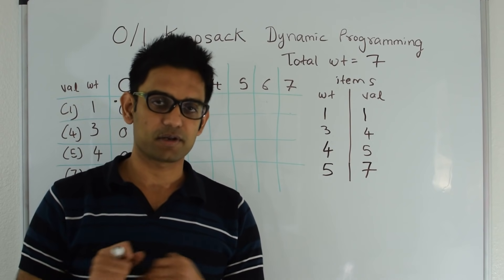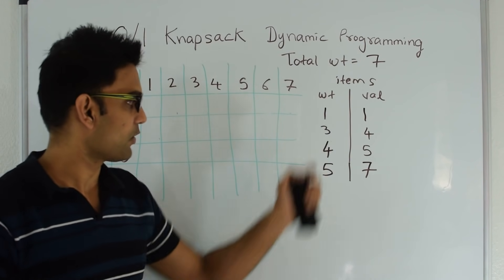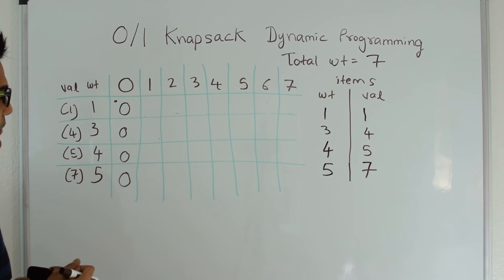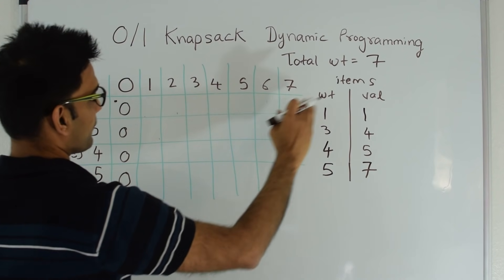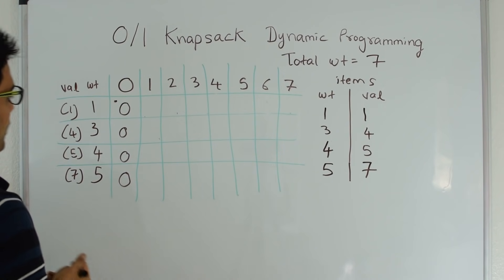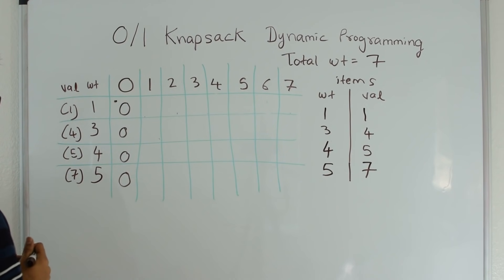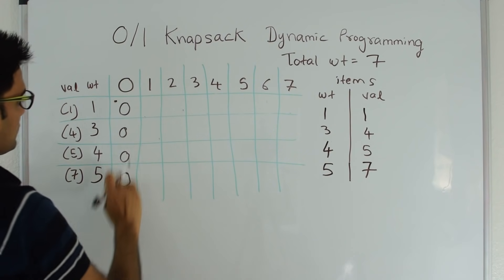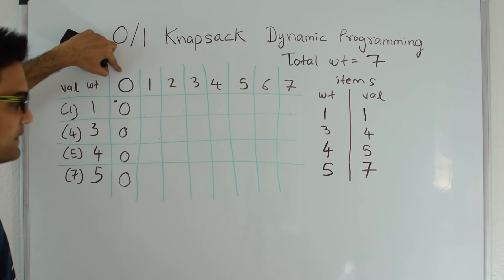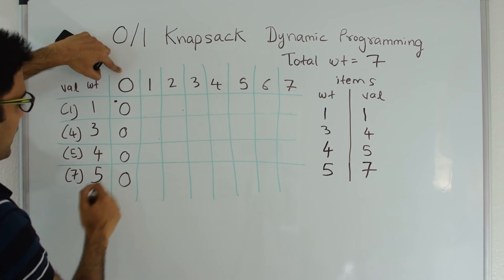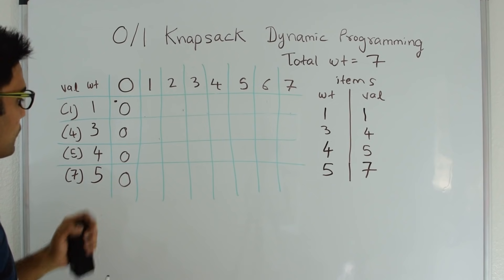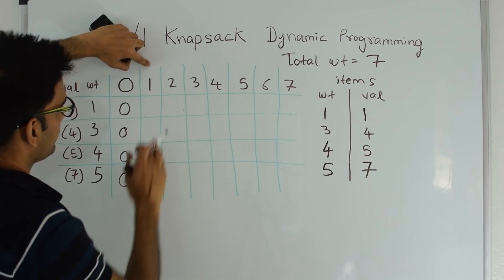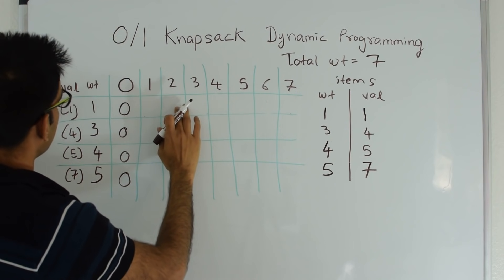Let's understand this with an example. I have a two-dimensional matrix where the total number of columns equals the total weight plus one, and the number of rows equals the total number of items. The first column is 0 — it means that if the total weight is 0, no matter what items I have, the maximum value I can get is always 0. That's why this entire column is 0.